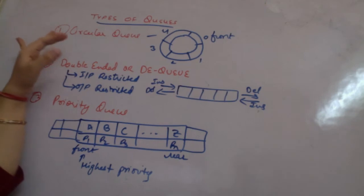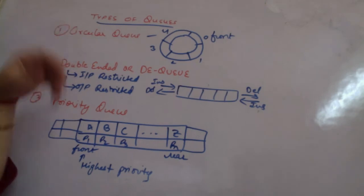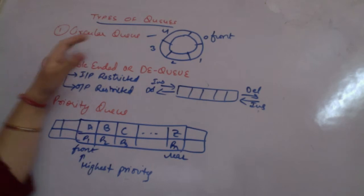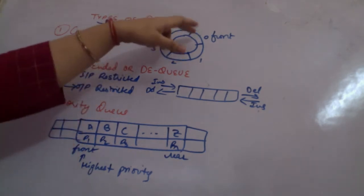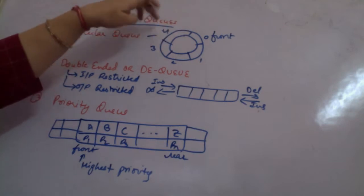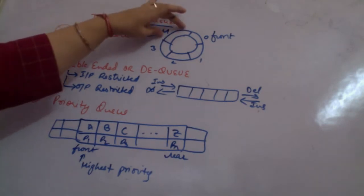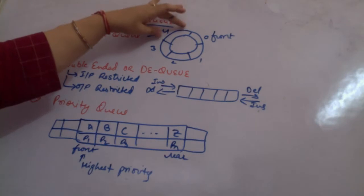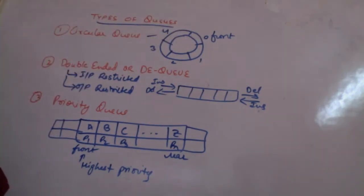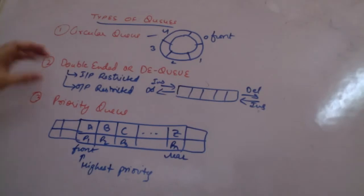One is known as a circular queue. In a circular queue, when you are deleting an element the front keeps on moving. After it reaches the rear end, which is the maximum of the queue, it will again restart from zero. So it's a circular queue — till there is some space available, you will never get an overflow condition.